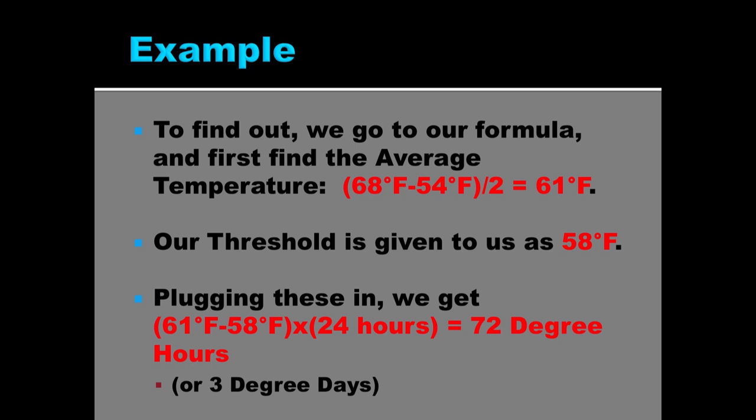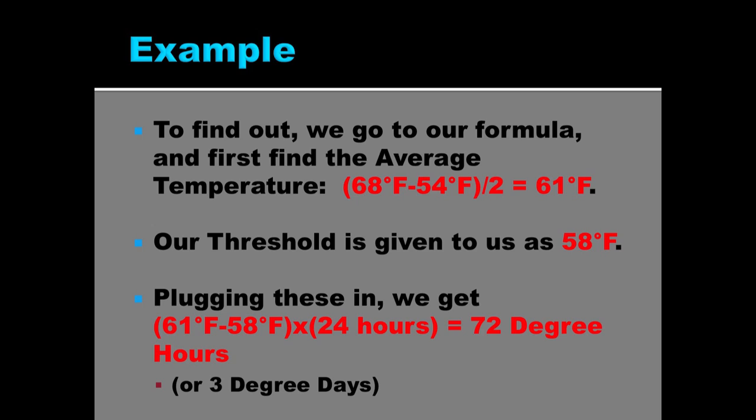Our threshold is given to us as 58. So we subtract those two and multiply by 24 to give 72 degree hours or 3 degree days. It doesn't really matter, they're both the same. If you multiply 3 degree days by 24, then you're given 72 degree hours. Simple as that.